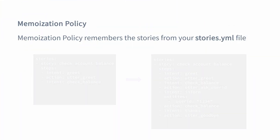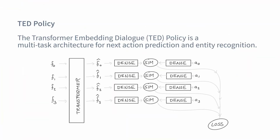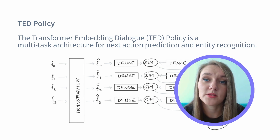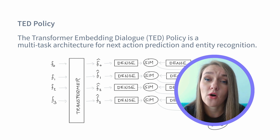Speaking about machine learning-based policies, you have the option to use the TED policy. TED stands for Transformer Embedding Dialog policy, which is an architecture for next action prediction. TED policy comes with a bunch of different parameters you can configure — for example, number of epochs, max history, number of layers, and more. To learn more about this policy, check out the video in the Algorithm Whiteboard series. TED policy is the main machine learning policy we recommend to enable your assistant to handle more complicated conversations and generalize on unseen user inputs.